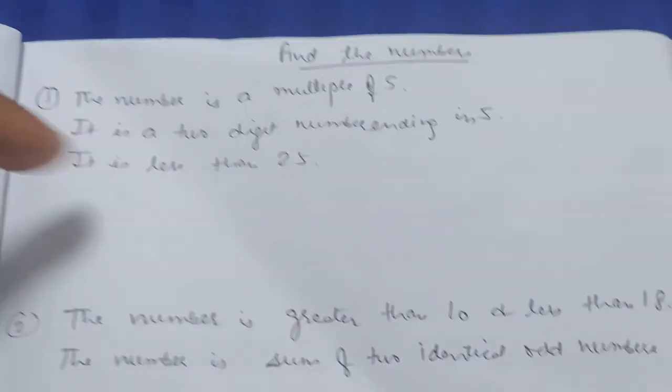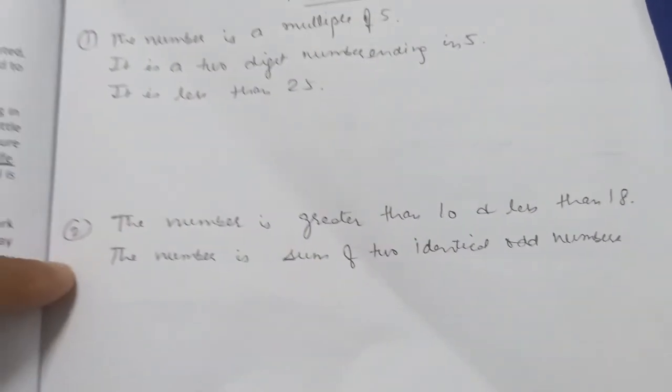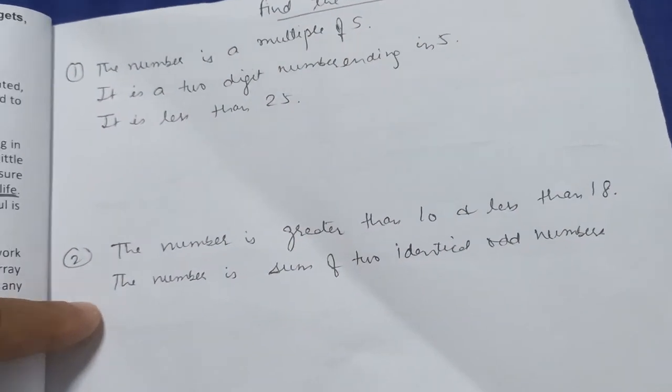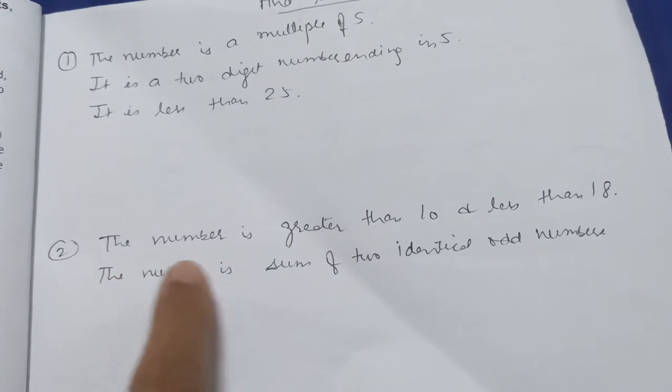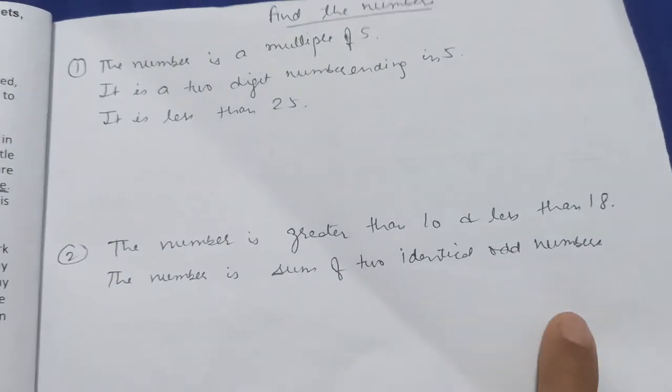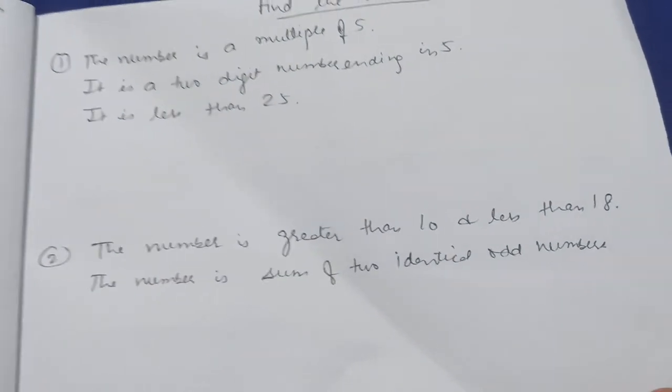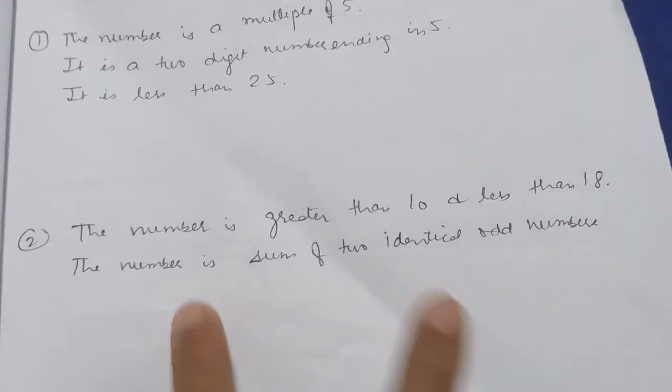The number is greater than 10 and less than 18. The number is the sum of two identical odd numbers. So she has to write first: 11, 12, 13, 14, 15, 16, 17. And then the sum of two identical odd numbers, so it will be 7 plus 7 equals 14.